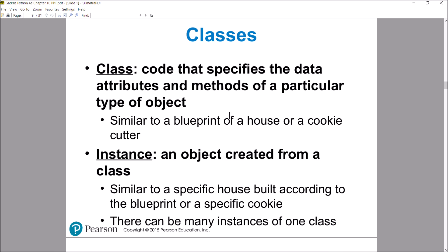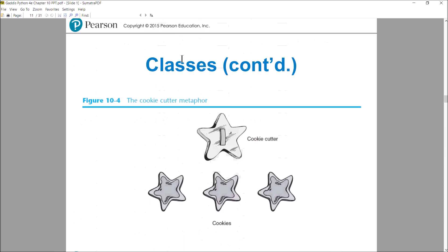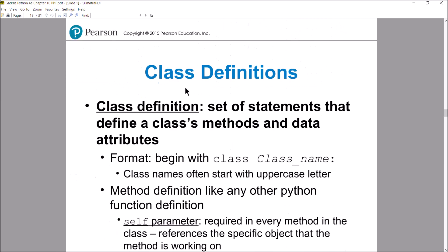You have separate instances of memory locations that can store pieces of data. By writing a class, we're combining variables and functions that can manipulate those variables to represent something. When we instantiate that class, we create an instance of that class — an object in memory. A class definition is a set of statements that define a class's methods and data attributes.